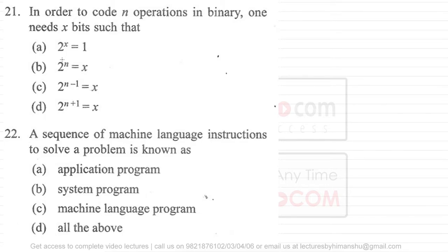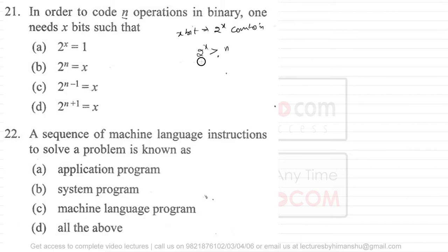Now let us take questions 21 to 30. The first question says: in order to code n operations in binary, one needs x bits such that... Generally, with x bits we can make 2 raised to power x combinations, and we can give one combination to each operation. The number of combinations can be more than, or exactly equal to, the number of operations, but cannot be less.